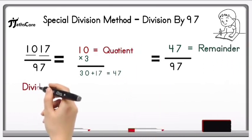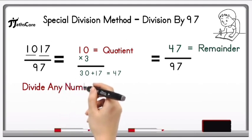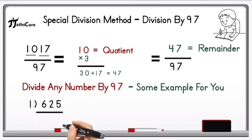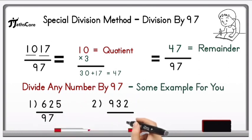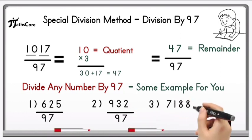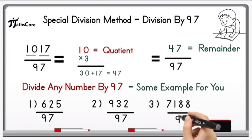So in this way you can divide any number by 97 using this Vedic math technique. Here are some examples for you: first is 625 divided by 97, second is 932 divided by 97, and third is 7188 divided by 97. Solve these examples and mention your answer in the comments. Thank you.